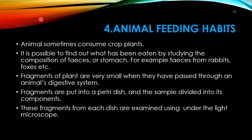Animal feeding habits: animals sometimes consume harmful plants. It is possible to find out what has been eaten by studying the composition of the feces or stomach contents. For example, feces from rabbits and foxes can be examined to determine the types of xylem or phloem fibers or other xylem tissues present. From these xylem and phloem tissue fragments present in their feces, one can identify which type of plant has been eaten by such animals.